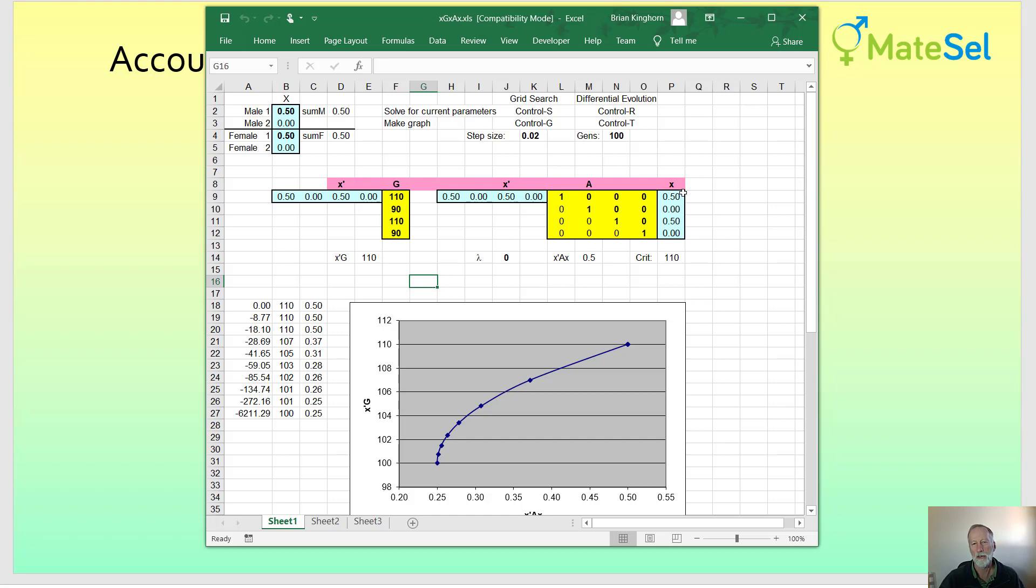Why do we divide by 2? Well, if we had two full sibs, they share half their alleles in common by descent, and so their NRM element is 0.5. However, if you cross them, the inbreeding coefficient in the progeny is expected to be 0.25, which is a half of x'Ax. And that's why we divide x'Ax by 2. For this example, we're putting zero emphasis on co-ancestry, looking only at genetic gain.